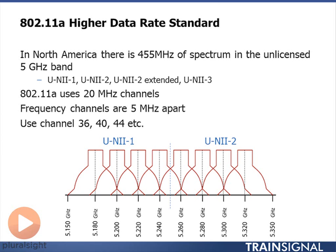Combined, there is 455 megahertz of spectrum in the 5 GHz band, compared to just three non-overlapping channels in 2.4 GHz. In just the UNII-1 and UNII-2 bands alone, there are eight non-overlapping channels. In the 5 gigahertz band, you'll see deployment on channels 36, 40, 44, 48, and so on. 802.11a uses a 20 megahertz channel, and since channels are defined 5 megahertz apart, the channel numbers jump by 4. The first channel is centered on channel 36 at 5.18 GHz, and channel 40 is centered on 5.2 GHz.